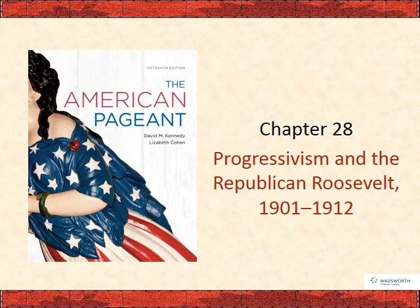Chapter 28: Progressivism and the Republican Roosevelt, 1901 to 1912. Now we're back on track where you've really got to focus on the presidents during each of these chapters, the major laws that are passed. This starts the Progressive Era — the first chapter of this unit — really asking: what is the role of the government? If you believe the government should take an active part in the daily lives of its citizens, what types of issues do citizens have and how can the government fix those issues? That's really what progressivism is all about.